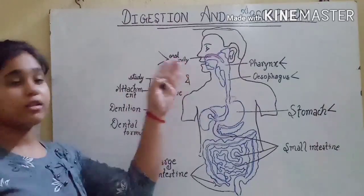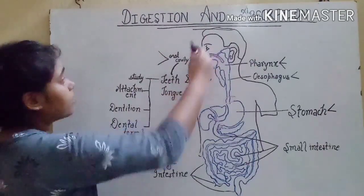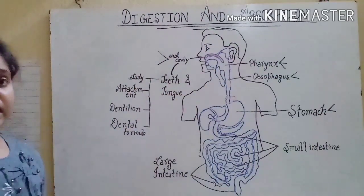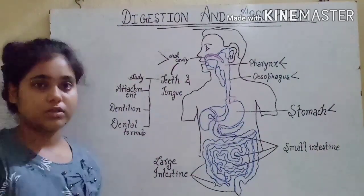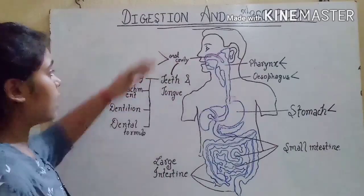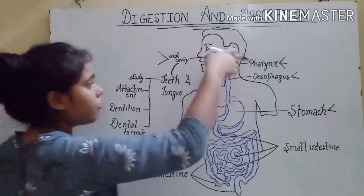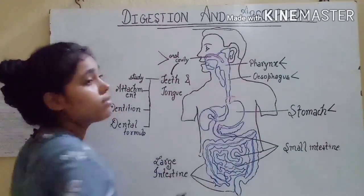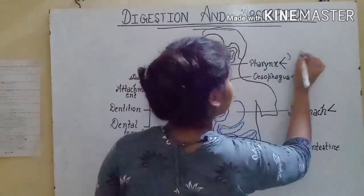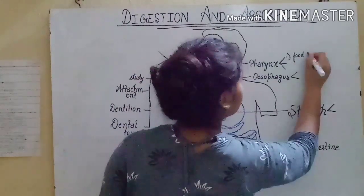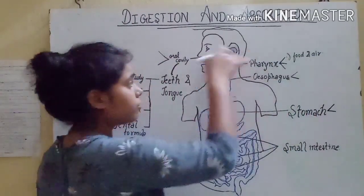Let's take an overview of the pathway — how the food enters and how it exits. The alimentary canal starts with the mouth, and it opens out with the anus, which is located posteriorly, while the mouth is located anteriorly. First, our food enters the mouth, which goes to the pharynx, which is the common pathway for both food and air.